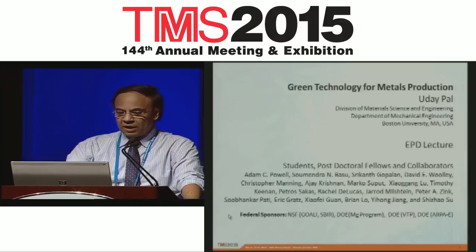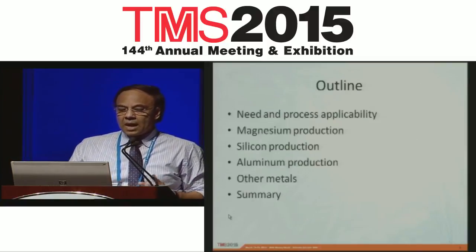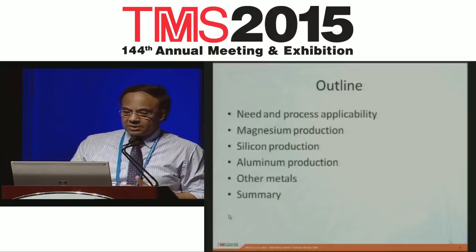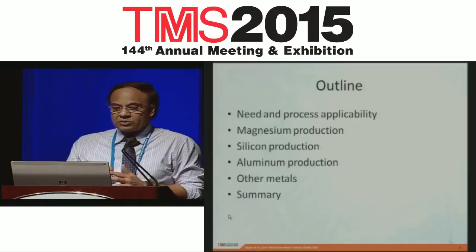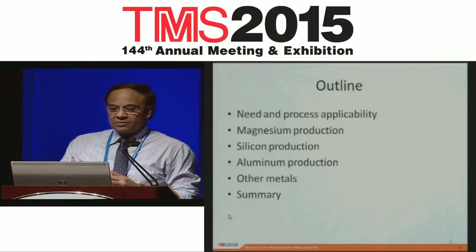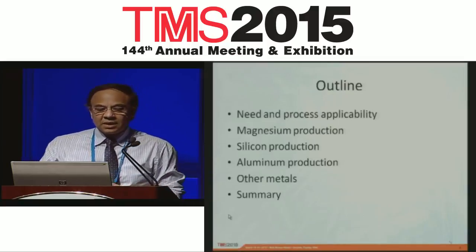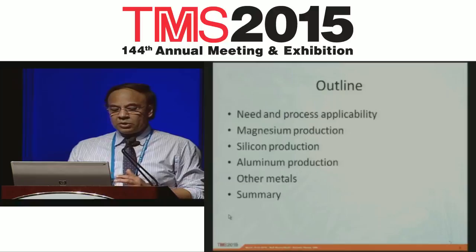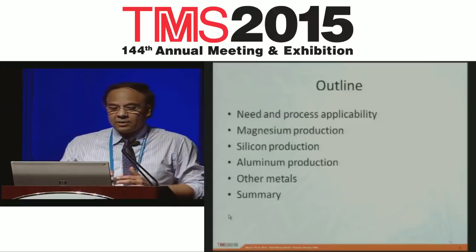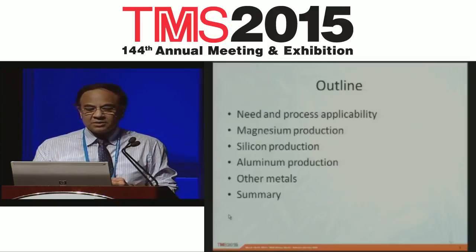Here is an outline. First I'm going to start with the need and describe the process and its applicability. I'm going to show how the process is used for magnesium production, silicon production, and aluminum production. I'll describe the process science, and then I will list the different types of metals that have actually been produced using this process. At the end I'm going to summarize and try to demonstrate the universality of the process for producing metals from their respective oxides.